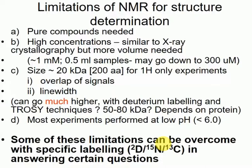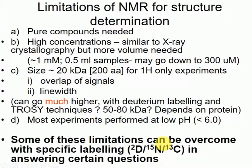But NMR is very, very slow. If you want to determine structures, ideally — very few people do proton-only anymore. You can go to maybe 100 amino acids for protons. But really nowadays, everyone does carbon-nitrogen labeling. And for carbon-nitrogen labeling, you can probably get to 20–30 kilodaltons. But if you want to go bigger than that, you have to deuterium label, and then you might be able to get to 50 kilodaltons — but it depends on the protein.